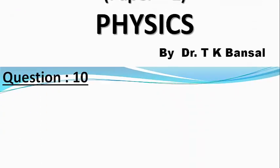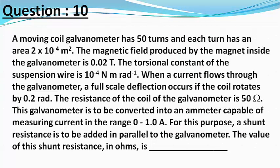Our next question: a moving coil galvanometer has 50 turns and each turn has an area of 2 × 10⁻⁴ meter square. The magnetic field produced by the magnet inside the galvanometer is 0.02 tesla. The torsional constant of the suspension wire is 10⁻⁴ newton meter per radian. A full scale deflection occurs when the coil rotates through 0.2 radians. The resistance of the coil of the galvanometer is 50 ohms.